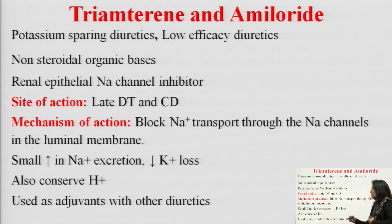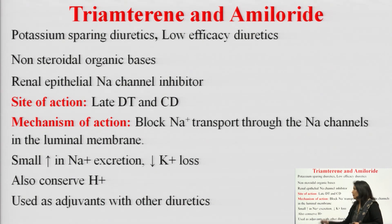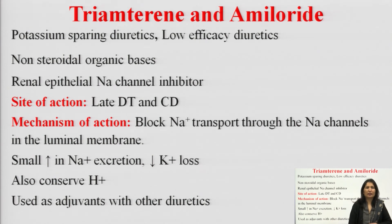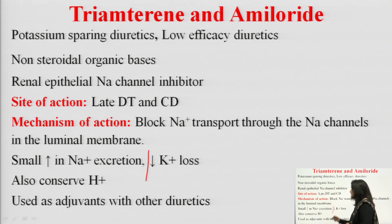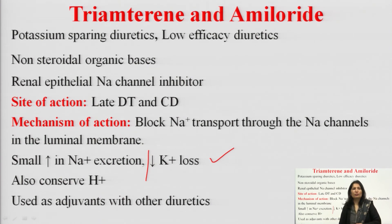Triamterene and amiloride are also potassium-sparing, low efficacious diuretics. They are non-steroidal and inhibit the renal epithelium sodium channel. They act at the same site — late distal tubule and collecting duct — blocking sodium transport through the sodium channel in the luminal membrane. They cause small increases in sodium excretion (mild natriuresis), decrease potassium loss, and also conserve hydrogen ions. They are used as adjuvants with other diuretics.